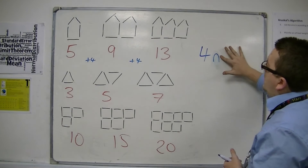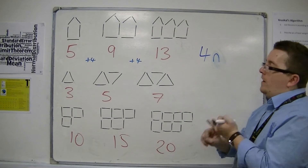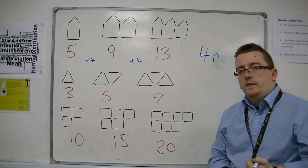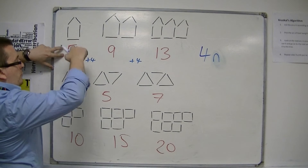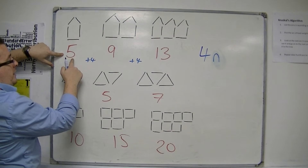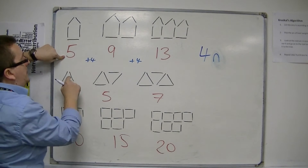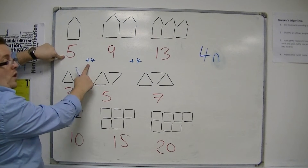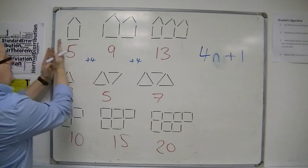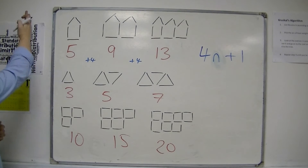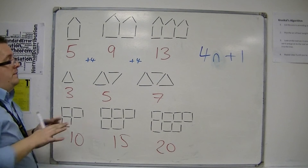Now, it's not just 4n, though, because there was also that part from the straight lines about where it crossed the y-axis — that y-intercept. How do we find it? Well, there's an easy way: take the first term of the sequence, which is 5, and then subtract the difference that we're adding up each time. So 5 take away 4 is 1, and so it is plus 1 on the end. Because effectively, what we're doing is taking a step back to where it crosses the y-axis.